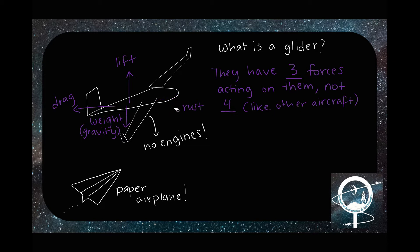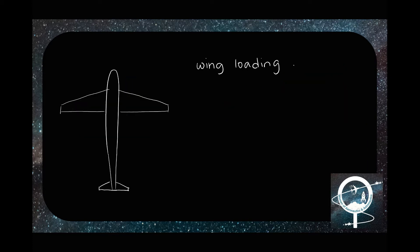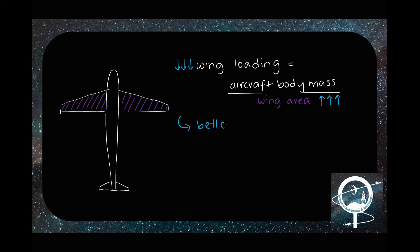Gliders, instead of having engines that generate thrust, rely on low wing loading. Wing loading is a plane's body mass divided by the wing area of the aircraft. The larger wing area relative to its mass, the lower wing loading an aircraft has. This allows a better glide ratio, meaning it can stay in the air for longer, even without being powered by an engine.